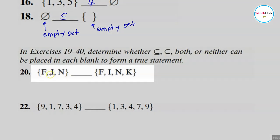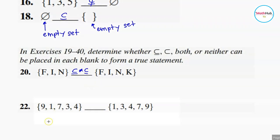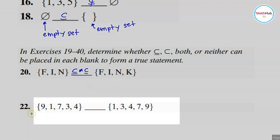For number 20, the set {F, I, N} compared to the set {F, I, N, K} — here you could write either subset or proper subset. Both of these can be true.